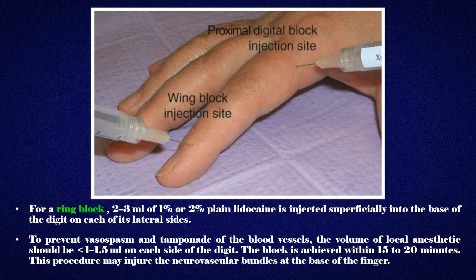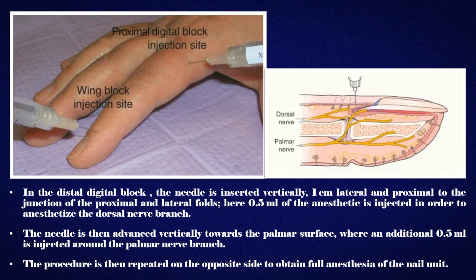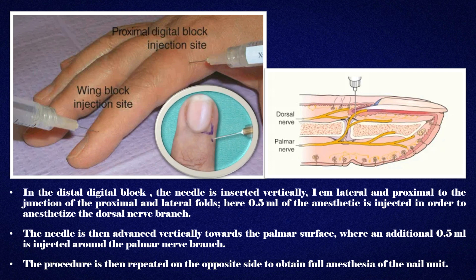This procedure may injure the neurovascular bundles at the base of the finger. In the distal digital block, the needle is inserted vertically, 1 cm lateral and proximal to the junction of the proximal and lateral folds. Here 0.5 ml of anesthetic is injected to anesthetize the dorsal nerve branch. The needle is then advanced vertically towards the palmar surface, where an additional 0.5 ml is injected around the palmar nerve branch. The procedure is repeated on the opposite side for full anesthesia of the nail unit.